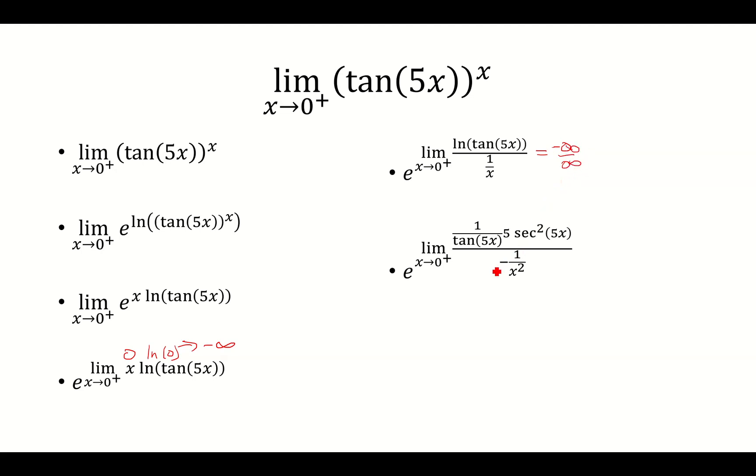And so I'm going to use L'Hopital's rule, take the derivative of natural log of tangent 5x, which is 1 over tangent 5x times 5 secant squared 5x. The derivative of 1 over x is negative 1 over x squared.